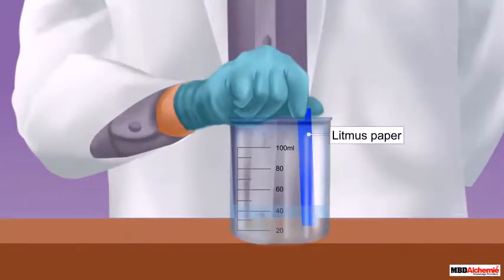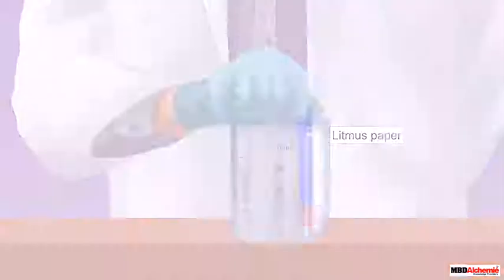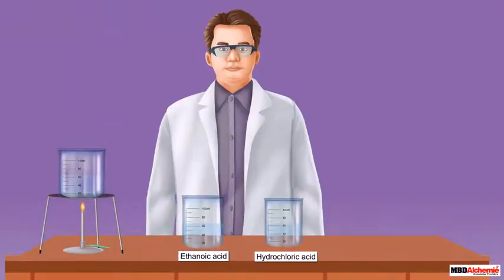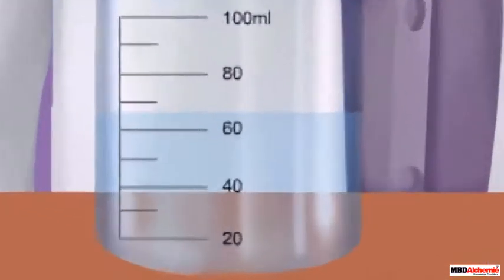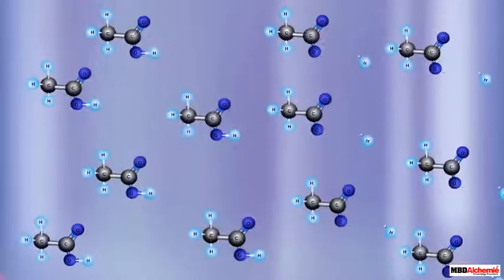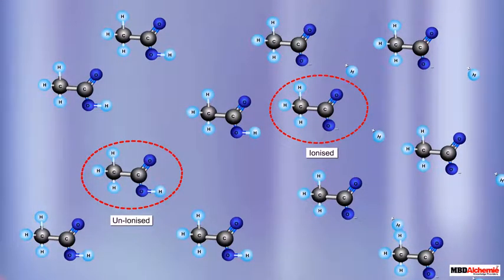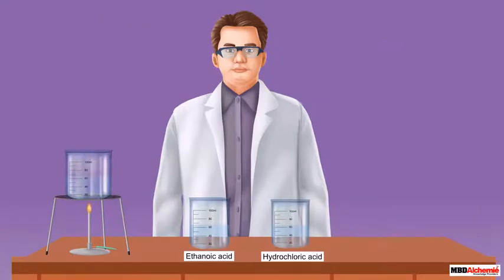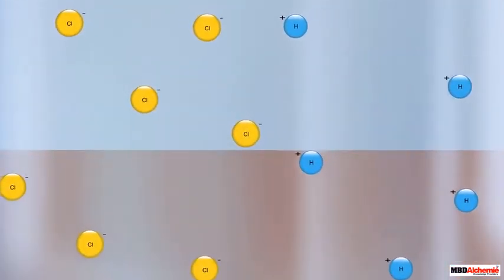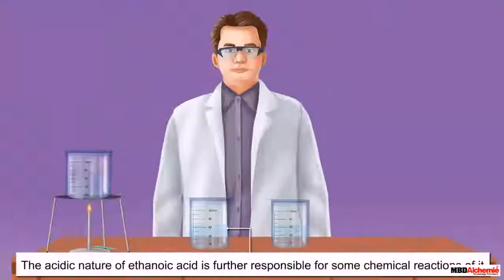However, it is not a very strong acid as mineral acids like hydrochloric acid. This is so because not all the molecules of ethanoic acid remain ionized in the solution. In contrast, in the aqueous solution of hydrochloric acid, all the molecules remain ionized.